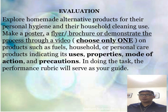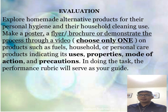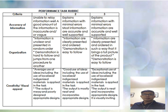For your evaluation, you are going to explore homemade alternative products for personal hygiene and household cleaning use. Out of this, you are going to make a poster, a flyer, brochure, or demonstrate the process through a video. Just choose one task on products such as fuel, household, or personal care products, indicating its uses, properties, mode of action, and precautions. The performance rubric will serve as your guide. This is your performance task rubric with corresponding criteria and points to be earned for the output you submit. Just read and be guided by that performance task rubric.